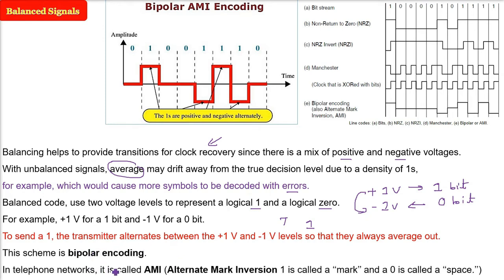In telephone networks, it is called AMI or Alternate Mark Inversion. Bipolar encoding in telephone networks is AMI. In AMI, Alternate Mark Inversion, 1 is called a mark and 0 is called a space.